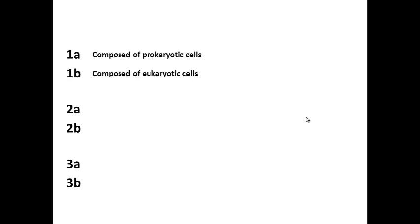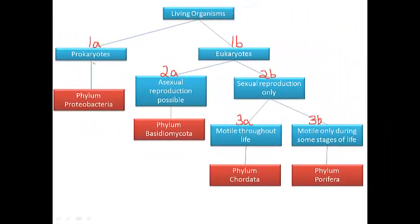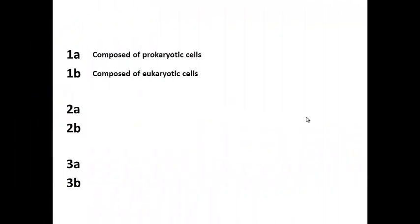Now I need to fill in where my statements go next on the dichotomous key. To do this, I go back to the flow map. The flow map shows that statement 1A connects directly to a terminal end, phylum proteobacteria. I go back to my dichotomous key and add some connecting dots to the end of my descriptive phrase, then write phylum proteobacteria.